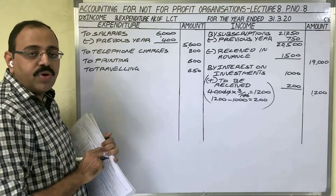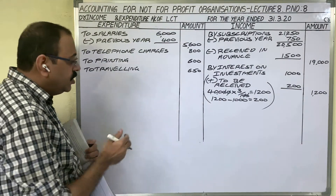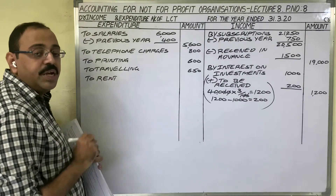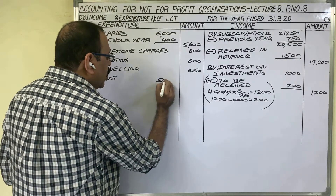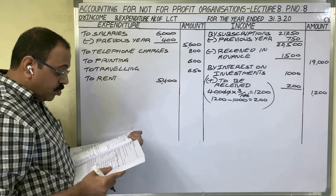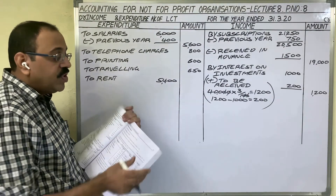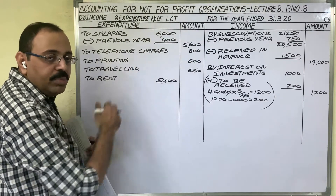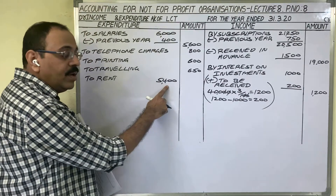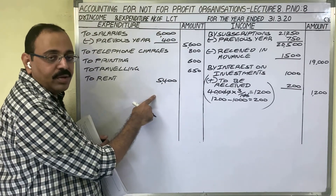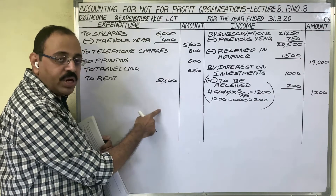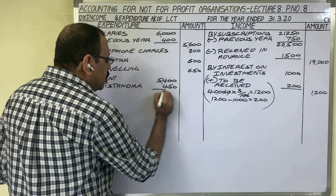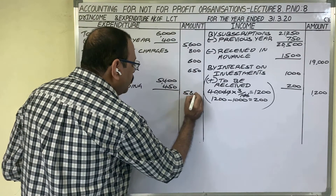Rent 5,400 rupees — every month the firm pays rent, so it is revenue expenditure and goes on the debit side. An adjustment is given, so write 5,400 in the inner column. Adjustment two states outstanding rent is 450 rupees, meaning 450 more is owed for the current year. Since the account is on an accrual basis, we add both paid and outstanding: 5,400 plus outstanding 450 = 5,850 in the outer column.